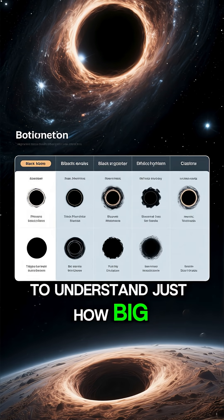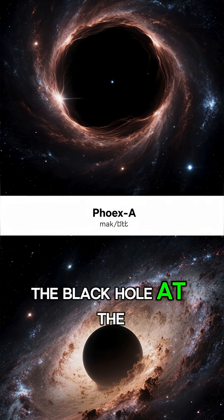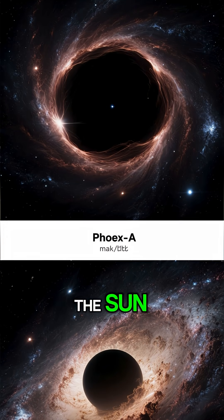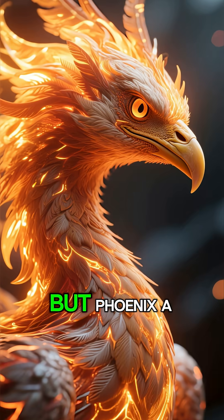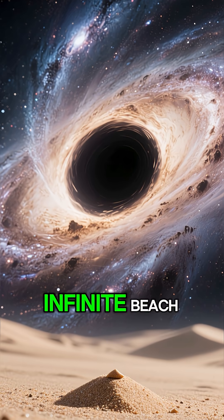To understand just how big Phoenix A really is, think about this: The black hole at the center of our galaxy is four million times the mass of the sun. Already seems impossible, right? But Phoenix A makes our black hole look like a grain of sand on an infinite beach.